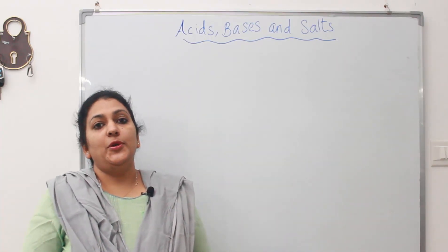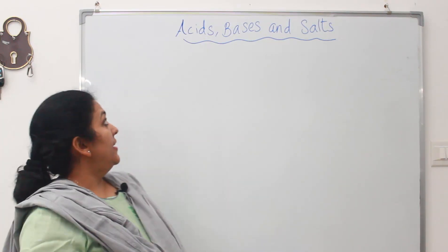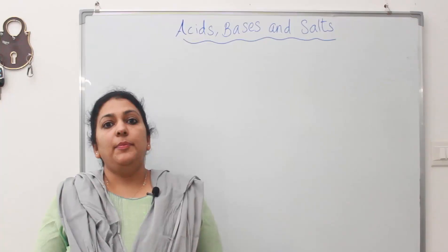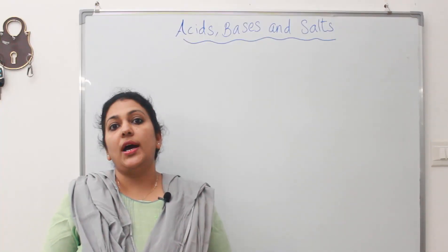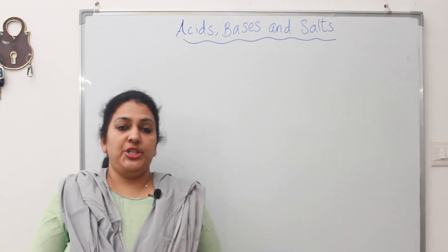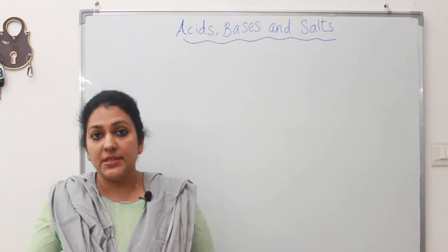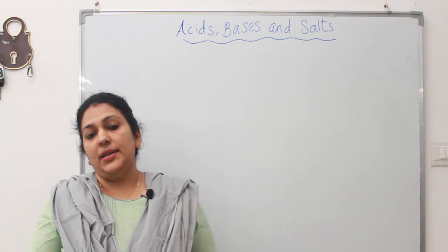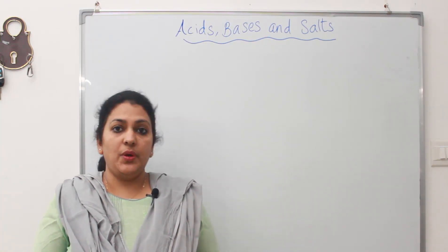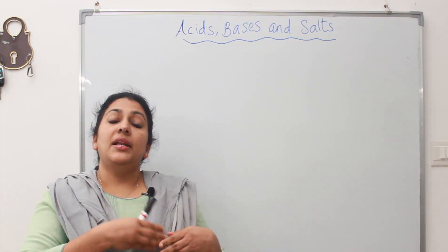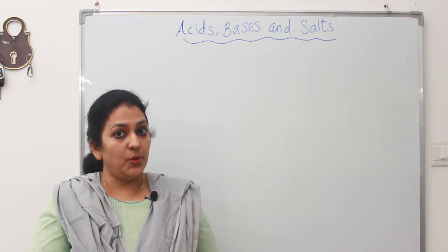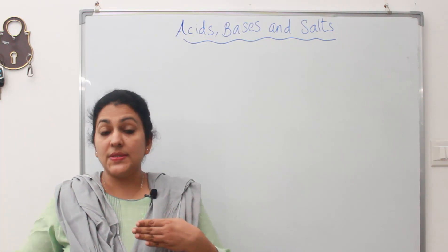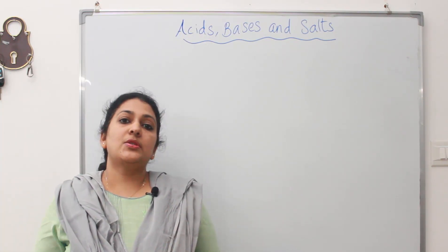Hello children, today we are going to continue the lesson on acids, bases and salts. In the previous session we discussed the chloralkali process, in which sodium chloride is used as a raw material and we get the products hydrogen, chlorine, and sodium hydroxide. We also learned the uses of each, and that when hydrogen and chlorine combine we get hydrochloric acid, and when chlorine and sodium hydroxide combine we get bleaches.